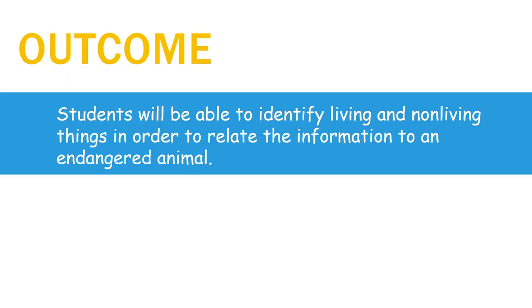Let's review the outcome for today. Students will be able to identify living and non-living things — did we do that? Yes. We talked about the characteristics of living things and how they're different from non-living things. We wanted to figure out if a panda bear was a living or non-living thing, and we decided that a panda bear is a living thing. Thank you for joining us today and learning more about living and non-living things.